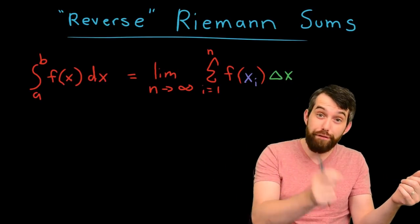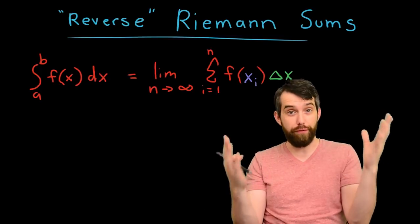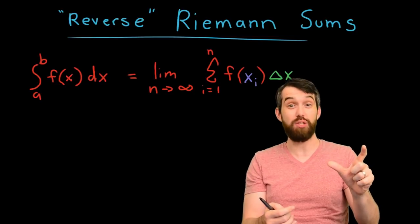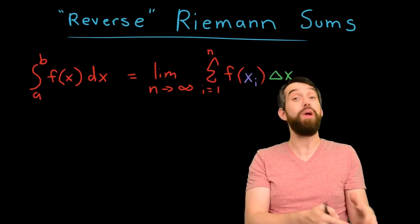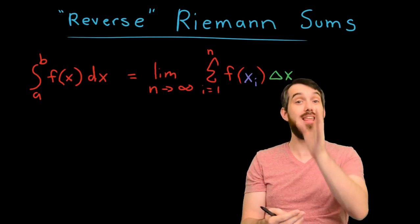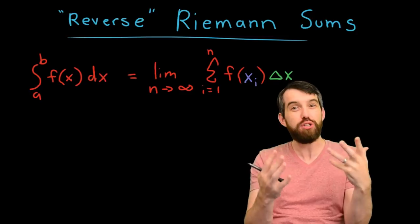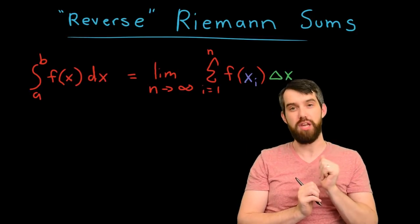I could give you the function and ask you to write down the sum, or the so-called reverse problem. I could give you this sum, and perhaps the interval a, b as well, and ask you, what is the function which this particular sum is the right endpoint Riemann approximation of? So it's that reverse problem, that going from the sum to the function, that I want to investigate in this video.